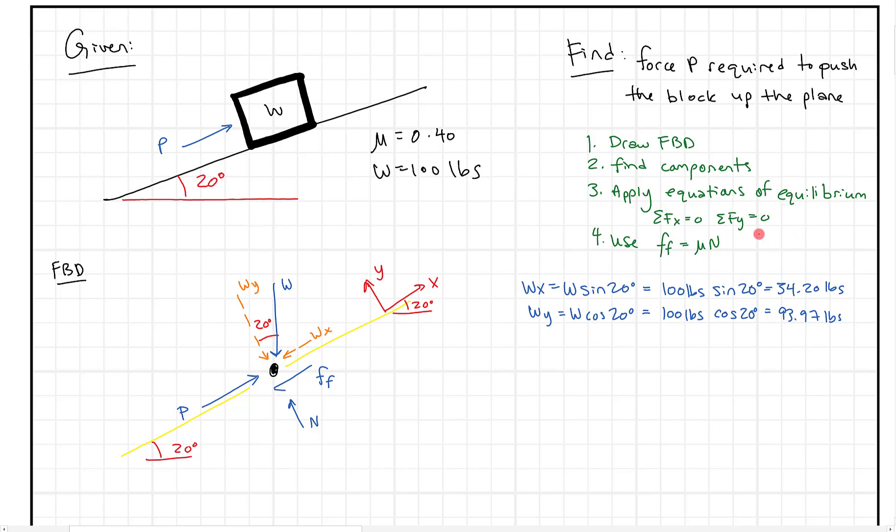Next we're going to apply our equations of equilibrium. I want to start with the forces in the y direction because there's fewer unknowns. We know our normal force has to equal our weight acting down in this case. So we have minus wy, and if up is positive, we have minus wy plus N equals zero. So that tells us that N is going to equal wy, which means N equals 93.97 pounds. So that's good, we figured out this normal force.